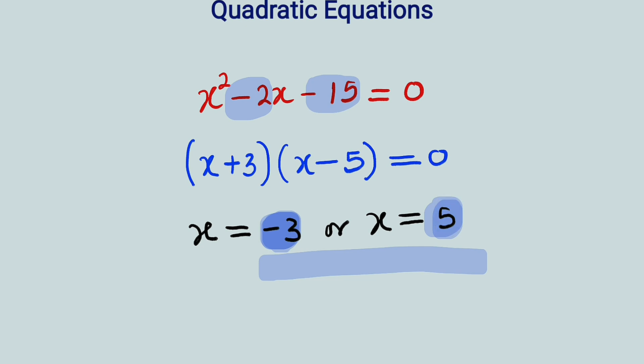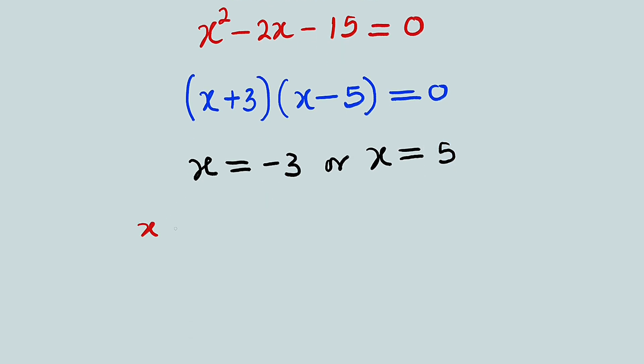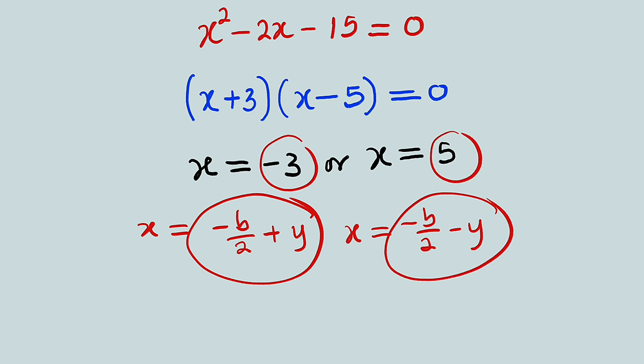So the idea he used here after his investigations, he realized these two roots can be obtained by taking x equal to minus b divided by 2 plus a constant. Let's call it y, though he used u. And the second one can be obtained by taking the same minus b divided by 2, then minus that constant. So if these are the roots, remember, after multiplying the roots, it will be equivalent to the constant term.